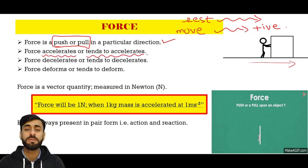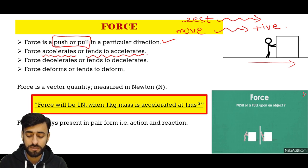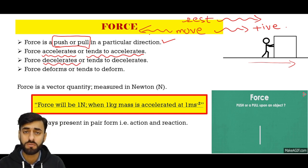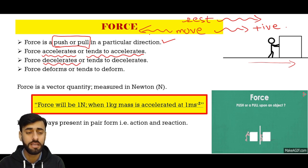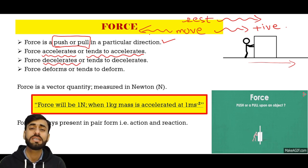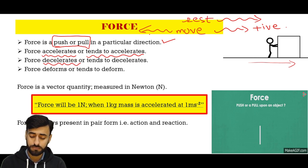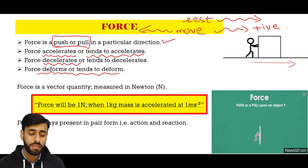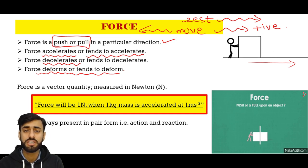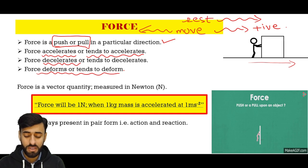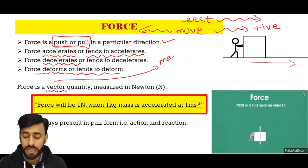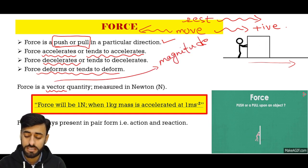This is also named as: force accelerates or tends to accelerate. Next definition: force decelerates — meaning if something is moving and we want to stop it or make it stationary, we apply a force against its motion, and this force produces deceleration, also known as retardation. And the fourth definition: force deforms and tends to deform. So students, we have now covered five definitions. For IGCSE, the best one to write in exams is: force is basically the rate of change in momentum. Force is a vector quantity, which needs both magnitude and direction.